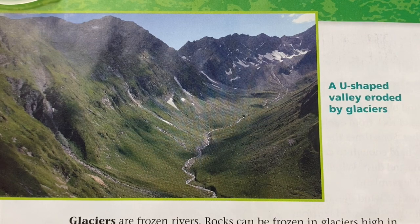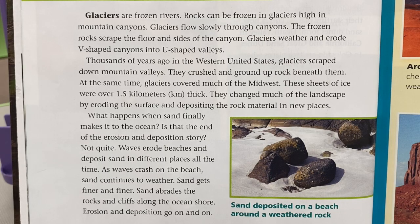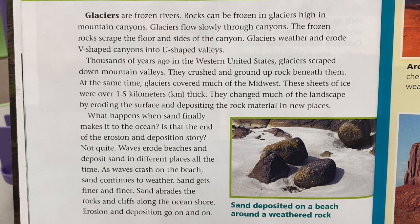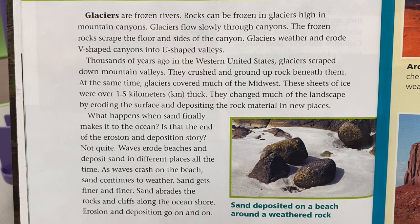Glaciers are frozen rivers. Rocks can be frozen in glaciers high in mountain canyons. Glaciers flow slowly through canyons — the frozen rocks scrape the floor and sides of the canyon. Glaciers weather and erode V-shaped canyons into U-shaped valleys. Thousands of years ago in the western United States, glaciers scraped down mountain valleys, crushing and grinding rock beneath them. At the same time, glaciers covered much of the Midwest — sheets of ice over 1.5 kilometers thick — changing much of the landscape by eroding the surface and depositing rock materials in new places.